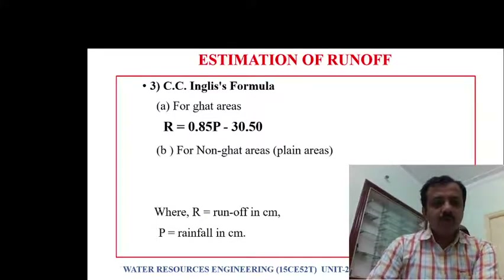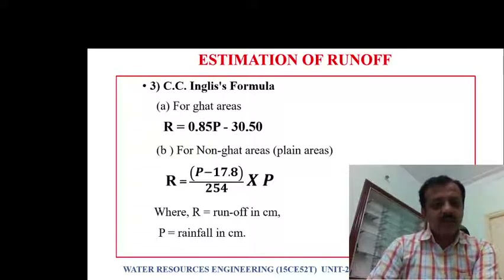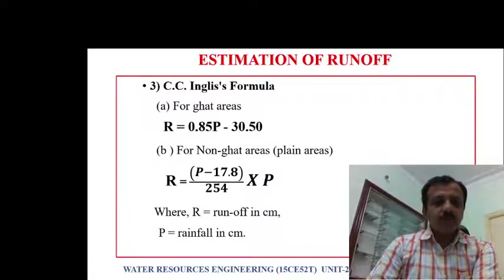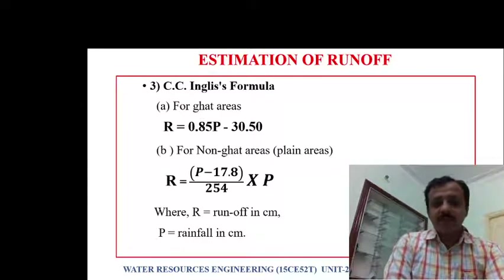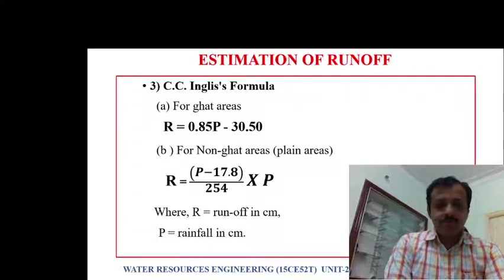The Inglis formula has two versions for Ghat and non-Ghat sections. For Ghat section: R = 0.85P − 30.5. For non-Ghat or plain areas: R = (P − 17.8) / 254 × P, where P is rainfall and R is runoff. This completes the recap of previous sessions.